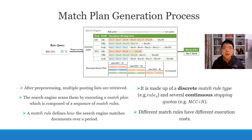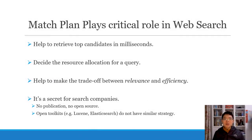MCC here stands for Matched Candidate Count. Different match rules have different execution costs. So let's think about why this technology is so important. First of all, it plays an important role in the search engine to retrieve top candidates in milliseconds. In addition, it decides the resource allocation for a query, and it helps to make the trade-off between relevance and efficiency for a search engine.